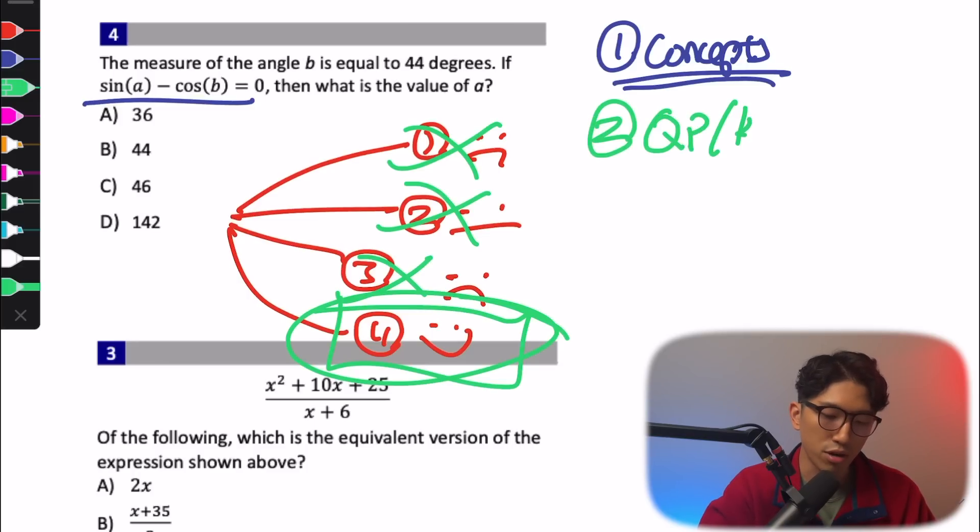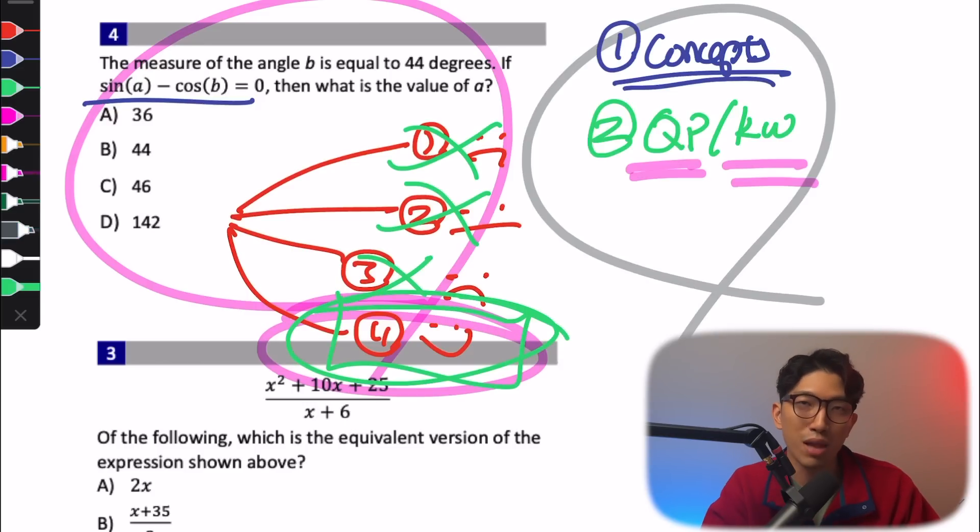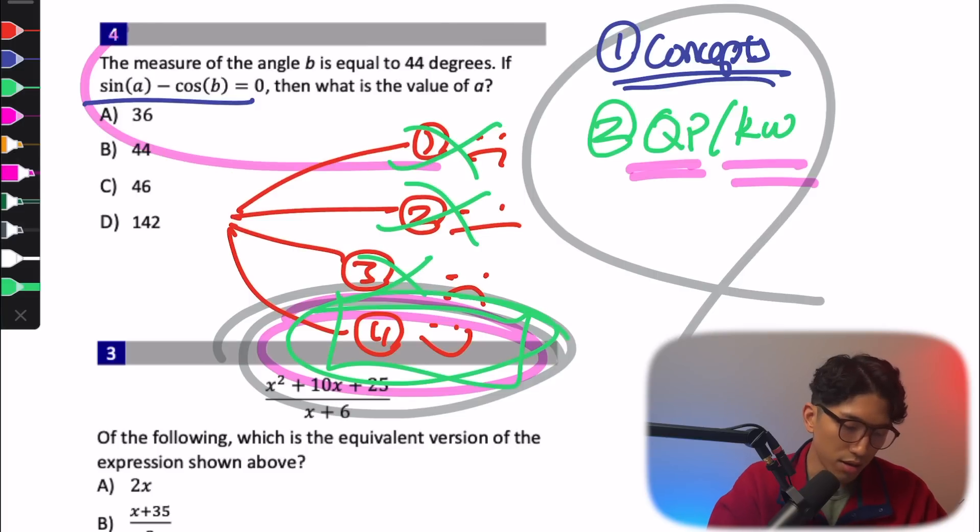So the concepts are going to take you halfway there. But the second missing piece is going to be the question patterns and keywords to look out for. If you have done enough SAT practice exams, you're going to recognize some of these questions. You're going to say, I have seen this question somewhere before with just a little bit of different words and different numbers. And the most important thing is that as long as you know what these question patterns are and what keywords to look out for, then you can see this question right here and immediately go into the correct method immediately.